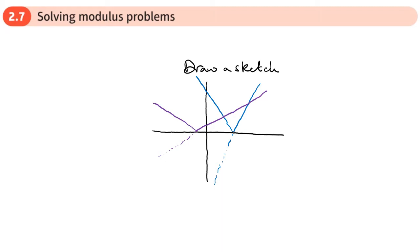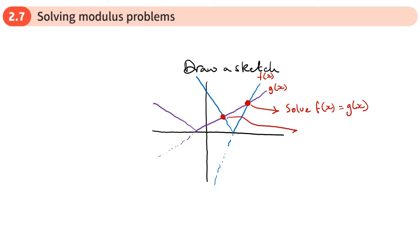The dotted line is like the original graph. I can see there'll be two solutions. Let's call this f(x) and this one g(x). That first crossing point is on the original part of both graphs, so to find it I would solve f(x) = g(x). However, this other point is on the reflected part of f(x), so I'd solve negative f(x) — remember you put a negative sign in brackets — equals g(x). Sketches will help you.